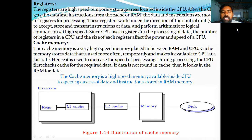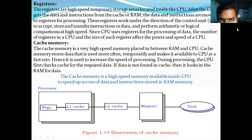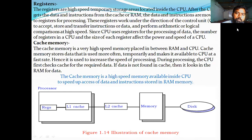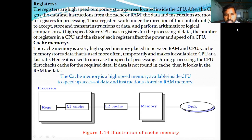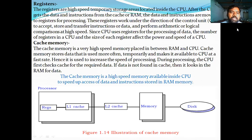For example, a calculator doing 3 plus 4: when you input 3, it is first stored in the register. The register is in cache memory and the main memory is in primary memory. So this is the process of processing. Registers are high-speed temporary storage areas located inside the CPU.